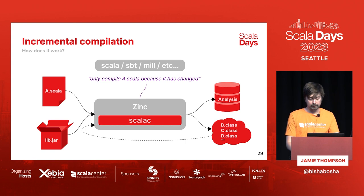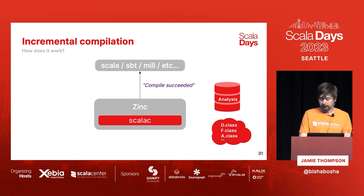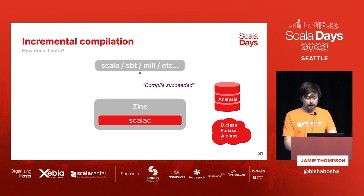Now we have a new analysis, and we see that the changes in A affect D and F, so those are recompiled. We produce more analysis and class files, and now nothing else needs to be invalidated. Compilation succeeds.